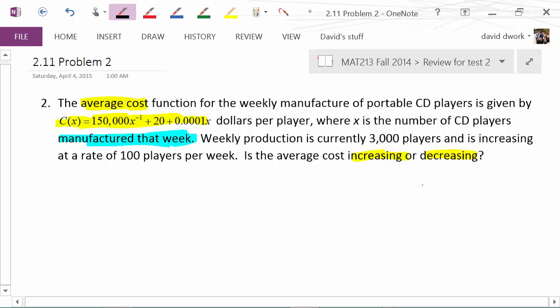Therefore the derivative of c would be dc/dt, which equals: bring down the negative 1, so that would be -150,000x^(-2) times dx/dt. Derivative of 20, that's a constant, so that's zero. And then 0.0001 dx/dt.